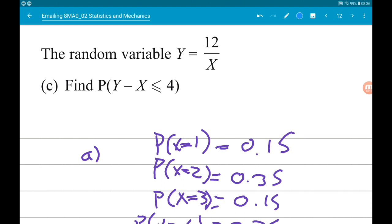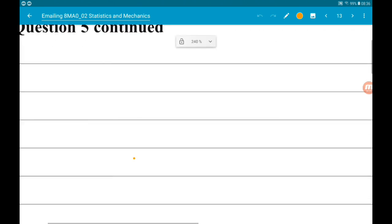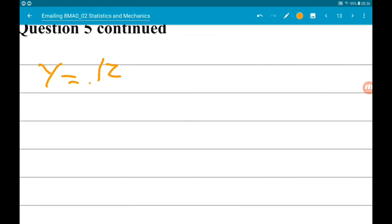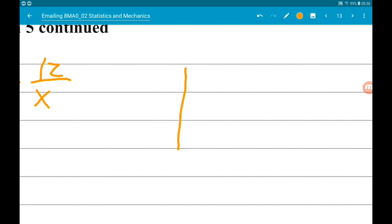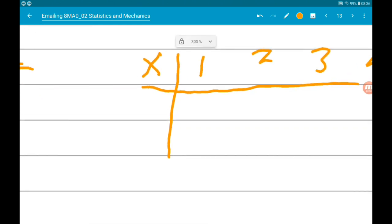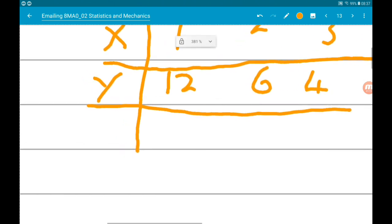Okay, so for part C, we are told the random variable Y is 12 over X. We want to find the probability that Y minus X is less than or equal to 4. So a table would probably be good for this. So we know that Y is equal to 12 over X. In a table, we know our values of X can only be 1, 2, 3, and 4. So our Y is going to be 12 over 1 is 12, 12 over 2 is 6, 12 over 3 is 4, and 12 over 4 is 3.